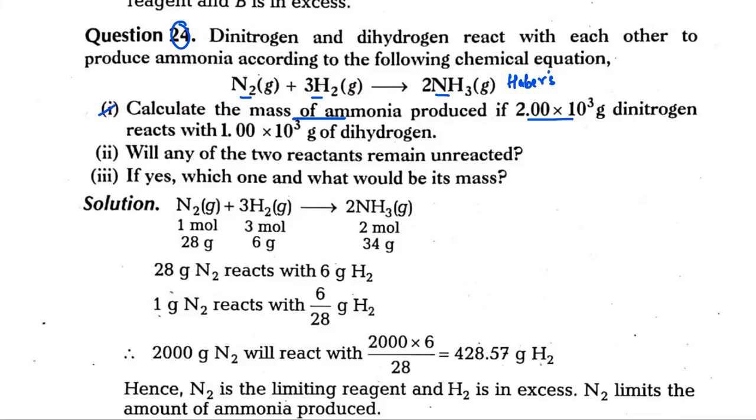If I have taken 2 kg of dinitrogen and it has reacted to 1 kg of dihydrogen or 1,000 g of dihydrogen, how much ammonia will we get? It is a very simple question but there are some methods that you will follow. You need to know how to do these questions.